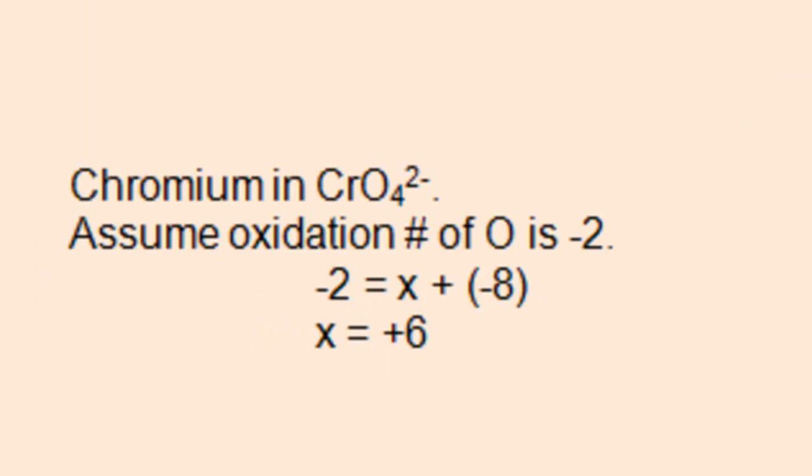Next, we'll determine the oxidation number of chromium in chromate. Again, we'll assume the oxidation number of oxygen is negative two. There's four oxygens, so that would give us negative eight, plus x, which is the oxidation number of chromium. The sum of those two must equal negative two. And in this case, the oxidation number of chromium is also positive six.